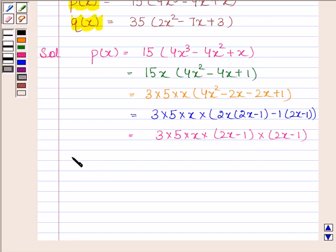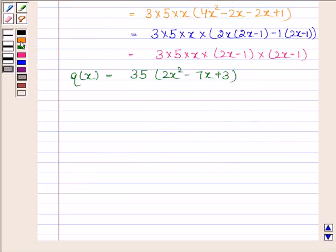Now Q(x) is equal to 35 into 2x squared minus 7x plus 3. This is equal to 5 into 7 into 2x squared minus 7x plus 3.